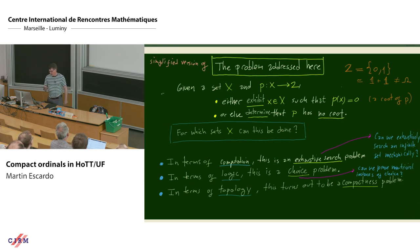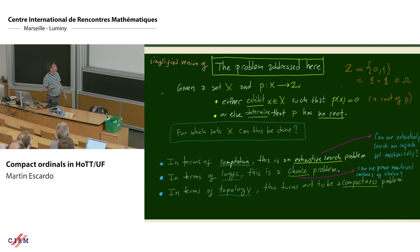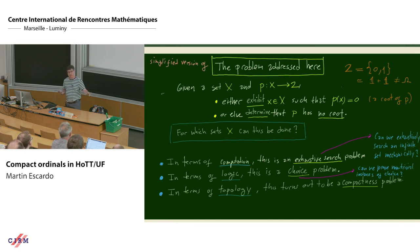Before considering ordinals, I'm going to consider a simplified version of the problem. I'll switch from decidable subsets to equivalently maps into the Booleans — it makes the language easier but doesn't make any difference. So given a set and a Boolean-valued predicate, the task is to either exhibit an element of X which I call a root, or determine that p has no root. The question is: for which sets X can this be done? This is an exhaustive search problem — you exhaustively search the type and check whether something satisfies the property.